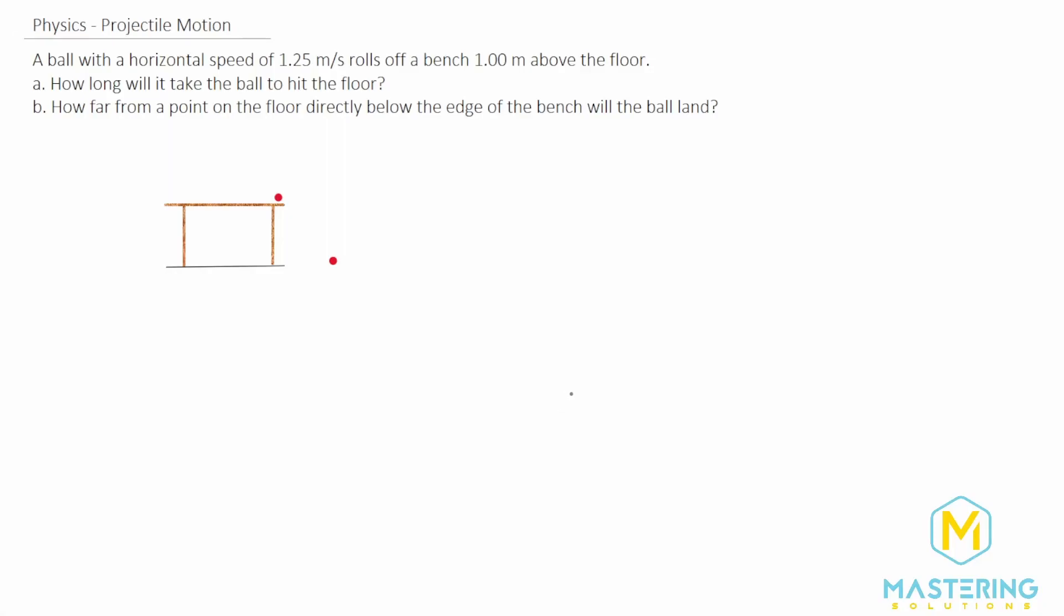Welcome to Mastering Solutions. This is a projectile motion problem, and the question says that a ball with a horizontal speed of 1.25 meters per second rolls off of a bench 1 meter above the floor.